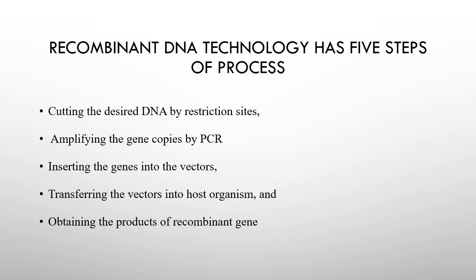There are five steps in recombinant DNA technology. Number one is the step in which we cut the desired DNA by restriction sites. The second step is to amplify the gene copies by PCR, which stands for polymerase chain reaction, in which we make multiple copies of a single gene. Amplifying means copying or increasing the number of genes.